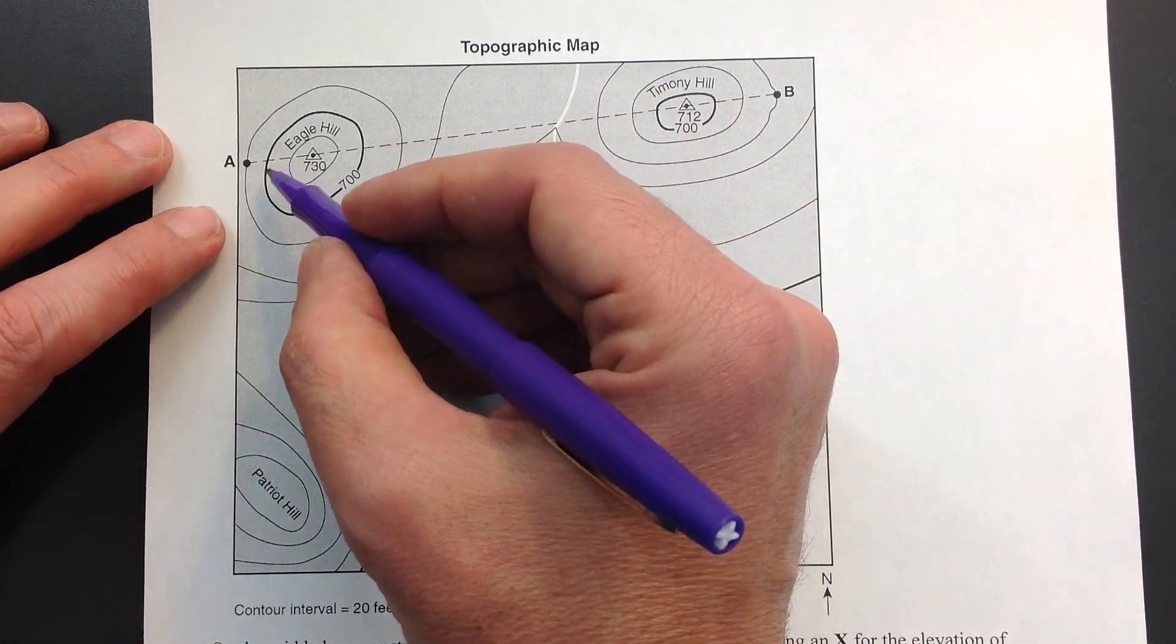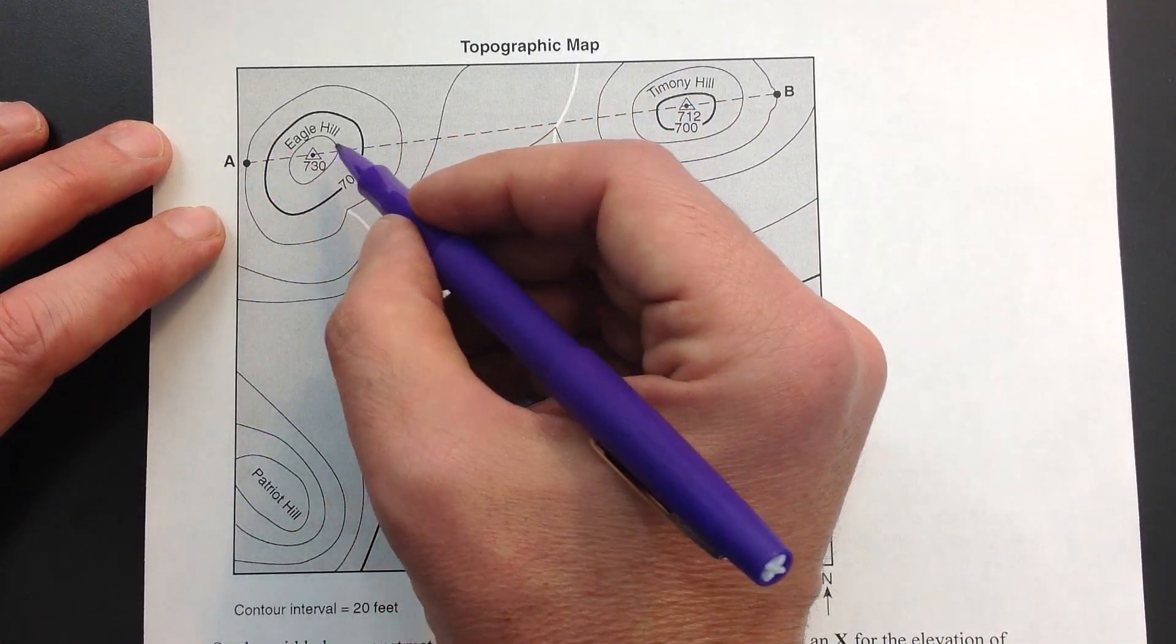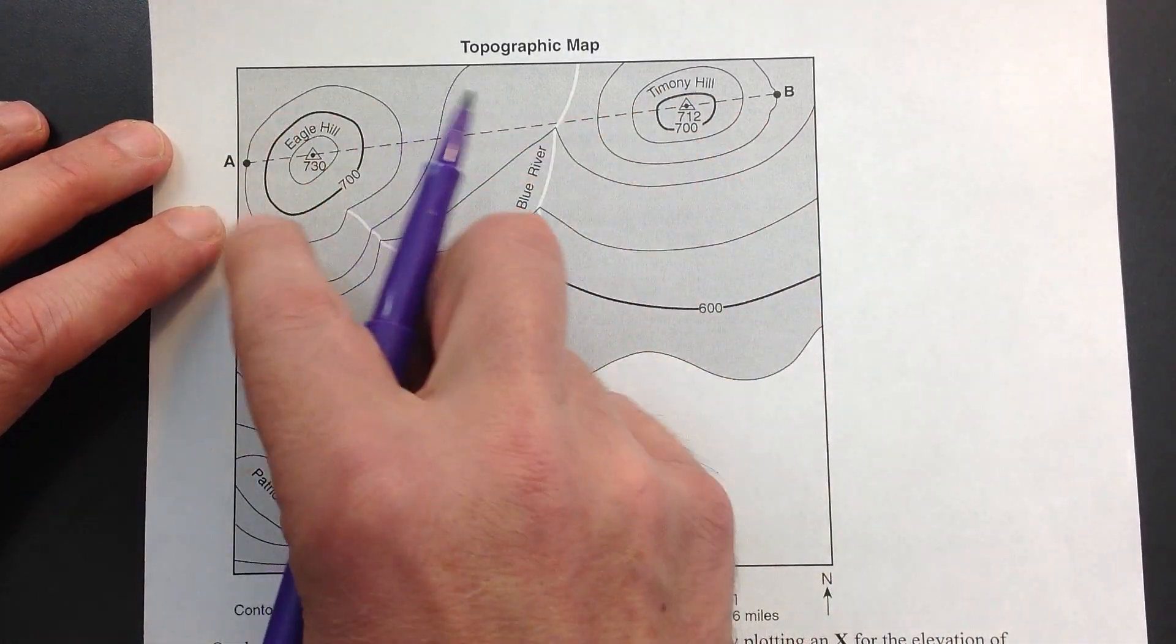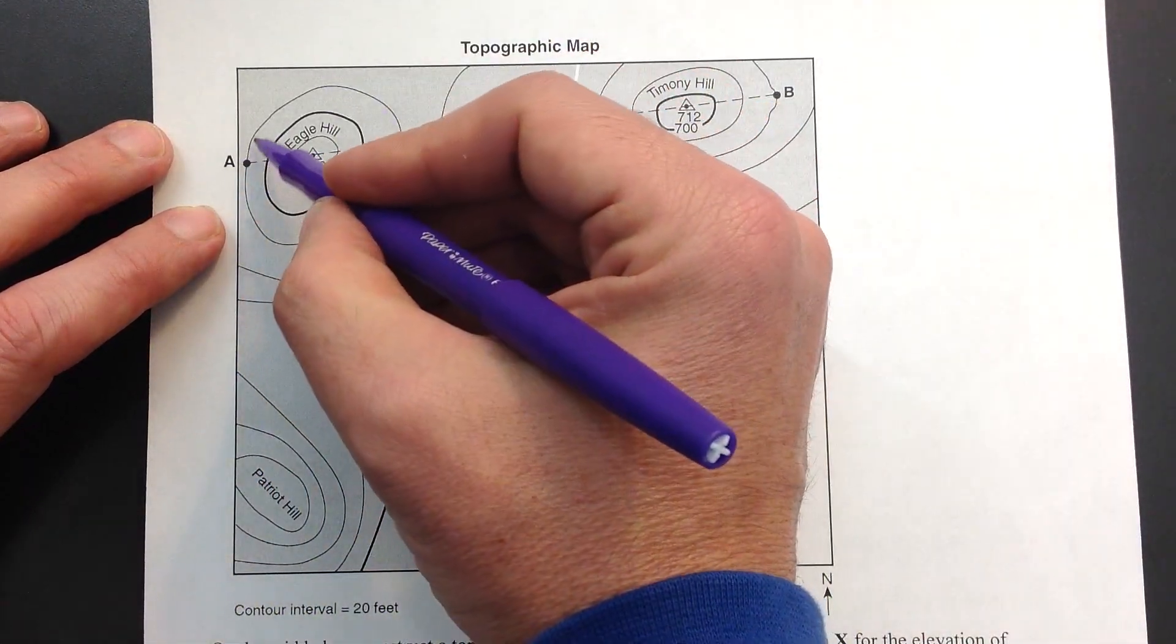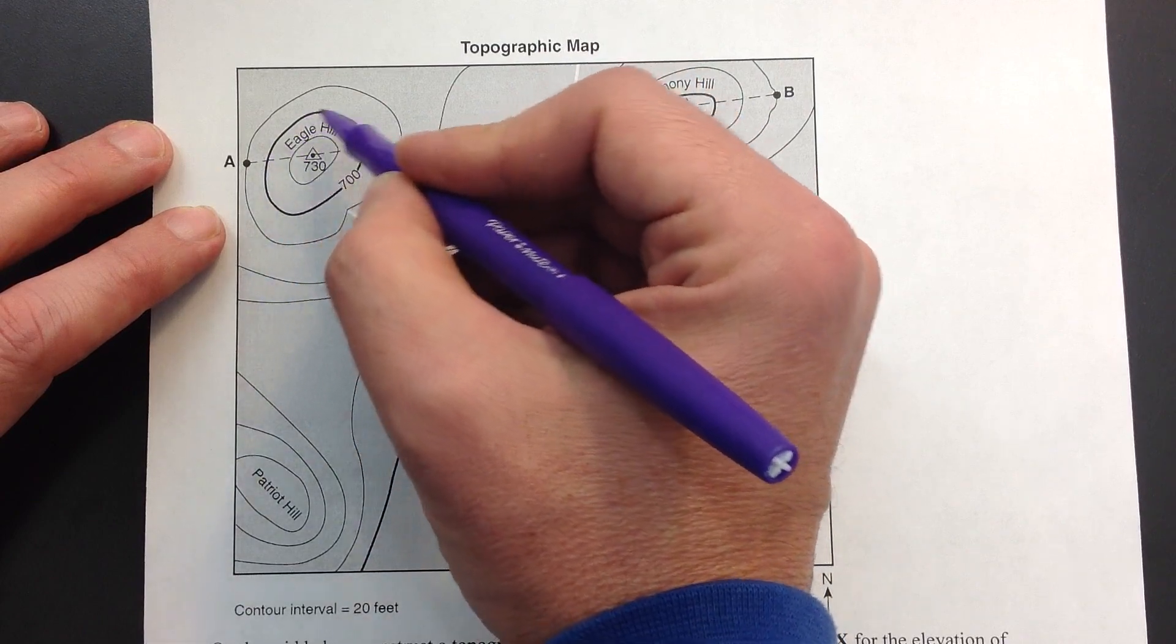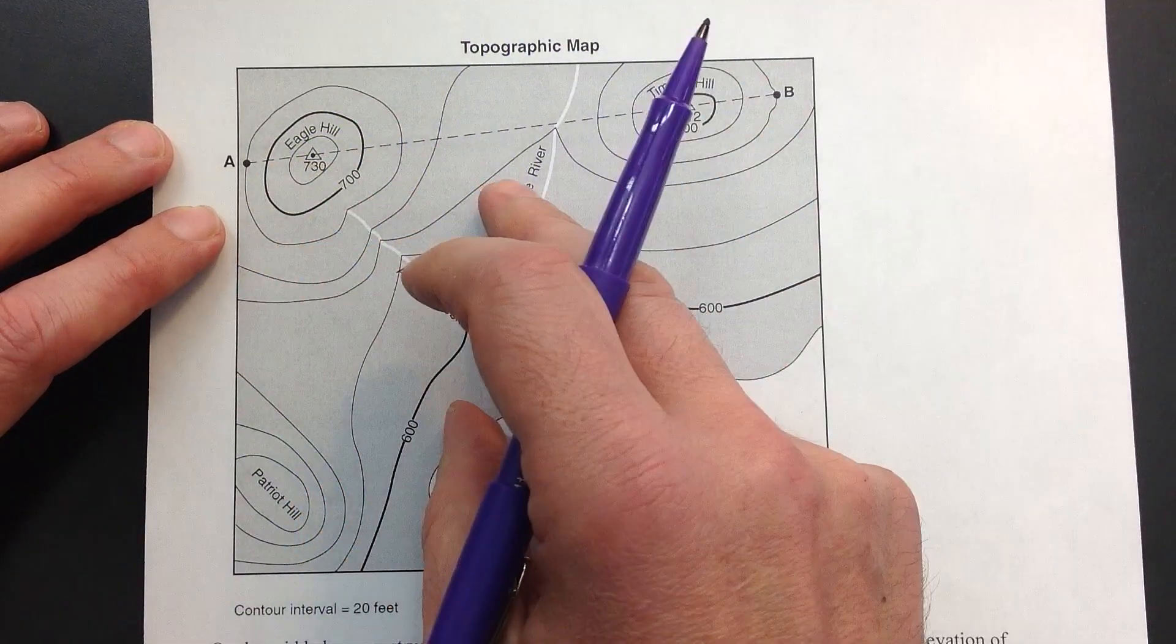First thing I'm going to do is I'm going to label every single line that intersects my baseline. So the point from A to B is called my baseline. These lines here with some of these elevations, these are called contour lines. They're going to show us elevation.